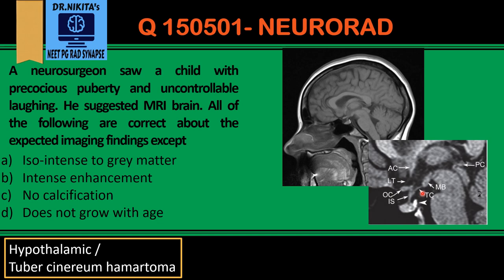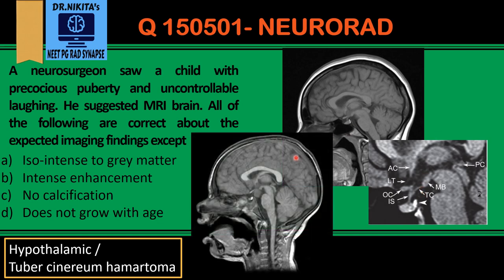A hamartoma is a disorganized tissue in that region, and that is what we see here — a lesion in the region of tuber cinereum. Comparing with a normal image where there is nothing in that region, here we see a well-defined mass. Since it is a hamartoma composed of disorganized gray matter, it will have features similar to gray matter and will be isointense to gray matter.